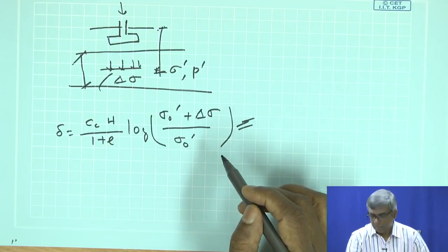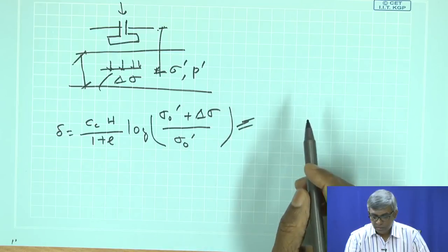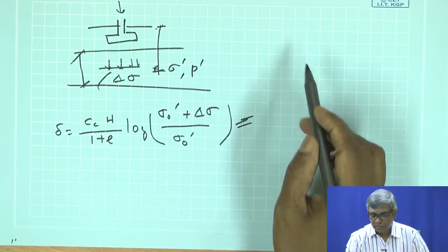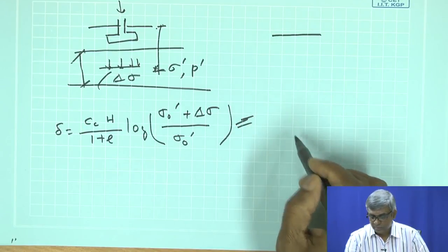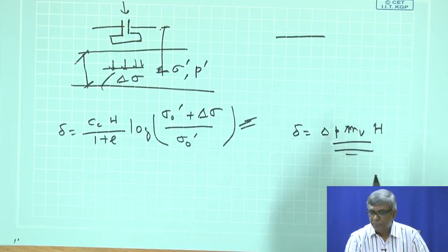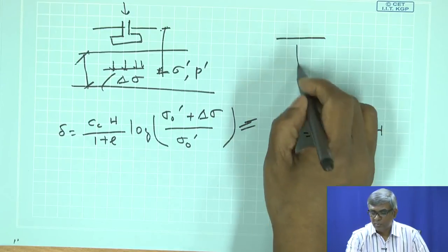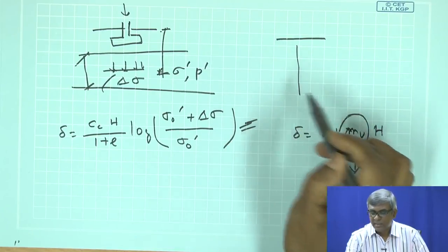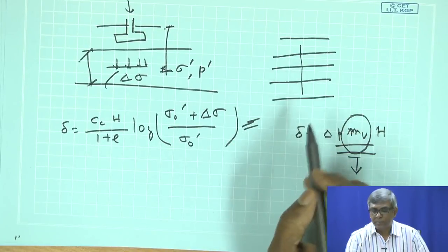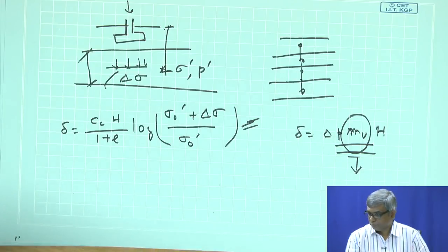There is another approach using mv: δ = Δp × mv × H. Most of the time mv is taken as constant, but in reality mv varies with depth. For a very thick layer, you need to divide it into sub-layers and find mv for each. In that way too, consolidation is indirectly a function of effective stress.